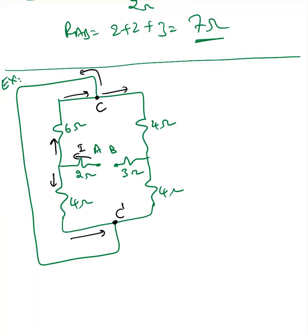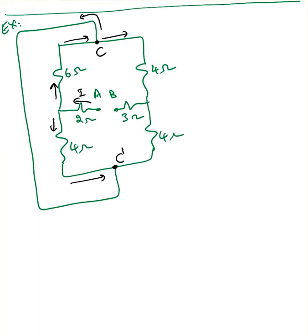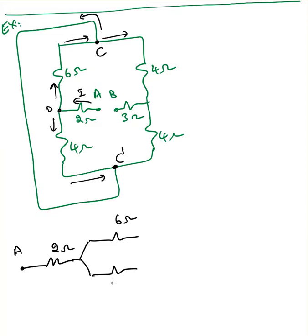One important thing: I can label this point as C and this is also a C terminal — or C prime. C prime and C are both connected together. To minimize error, I'm going to redraw the circuit. Starting from A, I have 2 ohms, then I reach node D. At D I have two paths: one going through 6 ohms, another going through 4 ohms. The 6-ohm path reaches C and the 4-ohm path reaches C prime, but they're both connected together.